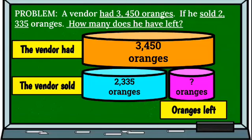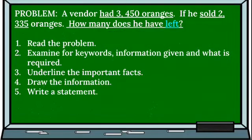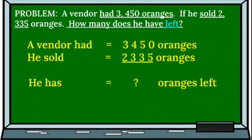So from our picture, we can move on to our statement. Let's write the statement. So here we have that keyword 'left' highlighted. That's the information, that's what we have to find out. So we have our statements from our drawing. The vendor had 3,450 oranges. He sold 2,335 oranges. And he has this question mark, oranges left.